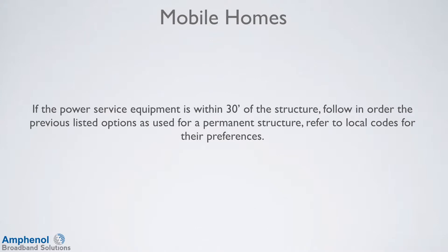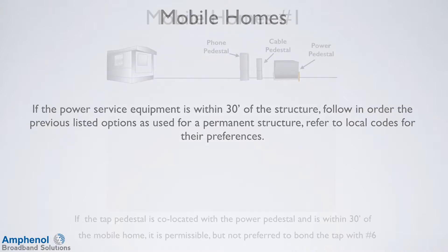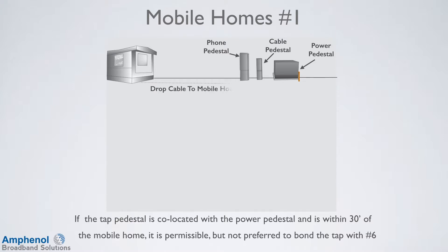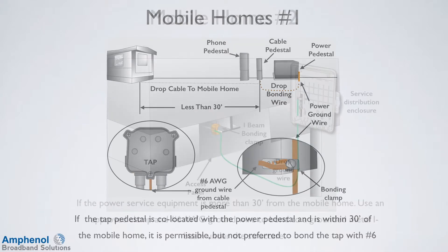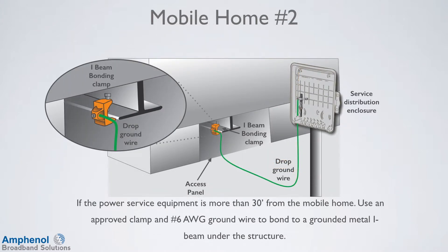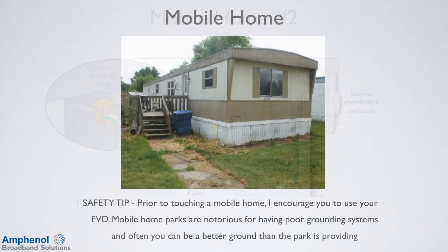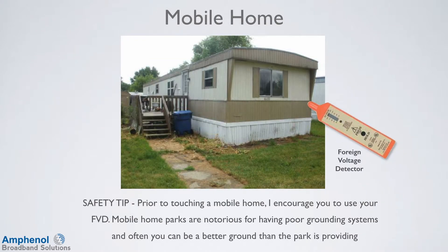With mobile homes, if the power service equipment is within 30 feet of the structure, follow the order of the previously listed options as used for a permanent structure. Refer to local codes for their preferences. If the tap pedestal is co-located with the power pedestal and within 30 feet of the mobile home, it is permissible but not preferred to bond to the tap. If the power service equipment is more than 30 feet from the mobile home, use an approved clamp and a number 6 gauge ground wire to bond to a grounded metal I-beam under the structure. Safety tip: prior to touching a mobile home, use your foreign voltage detector, as mobile home parks are notorious for poor grounding systems, and you can often be a better ground than the park is providing.